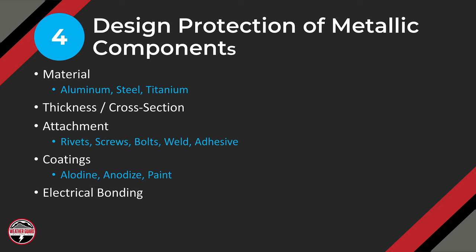Moving on to step four: design protection for metallic components. We're looking at typical materials — aluminum, steel, titanium — things used in aircraft. We want to look at cross sections, thicknesses, how they're attached: bolted, welded, riveted, or adhesively bonded. We'll look at coatings from anodized coatings, which are non-conductive, to alodine coatings, which are conductive, plus different paints and surface protectants. We want to make sure that when we design a piece of metal to carry lightning current, it has adequate cross section and the joints can carry lightning current without coming apart.